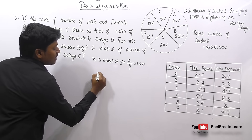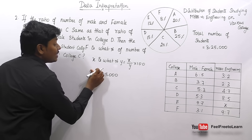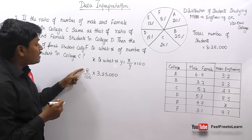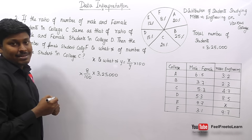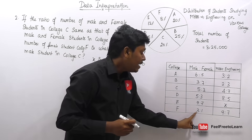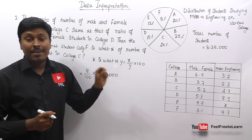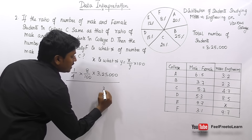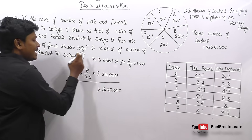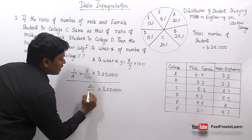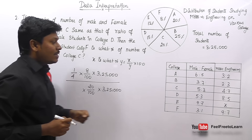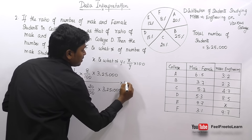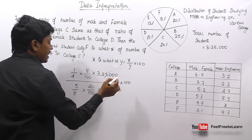College F has 8% of 3,25,000 students. Female ratio in college F is 1 out of (3+1) = 4. College C has 20% of 3,25,000 students. Male ratio in college C is 5 out of (5+3) = 8. The formula is: [8/100 × (1/4) × 3,25,000] divided by [20/100 × (5/8) × 3,25,000], then multiplied by 100.